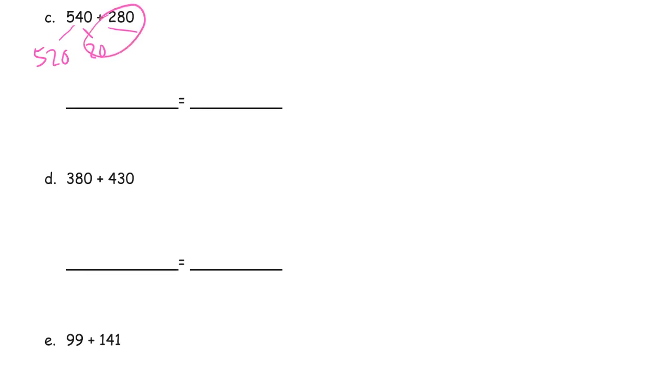Here is 300. So we have 520 plus 300. And now we're just looking at our 100s digits. That's 800. And then we still have the 20 here. 820.